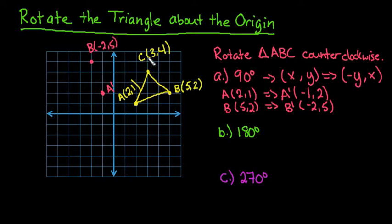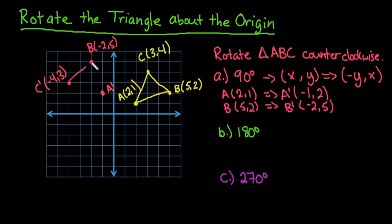And then for C', we would switch the coordinates. It would put us at (-4, 3). So we'd go back 4 and up 3. This would be our C', which is (-4, 3). And then we would just connect our dots. All we did was take this triangle and rotate it 90 degrees.